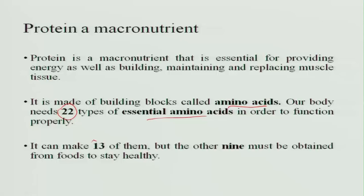The body can synthesize 13 of the amino acids using other material, but the other 9 have to be obtained from food essentially so that we stay healthy. That is why they are called essential amino acids — they have to be essentially provided through diet.